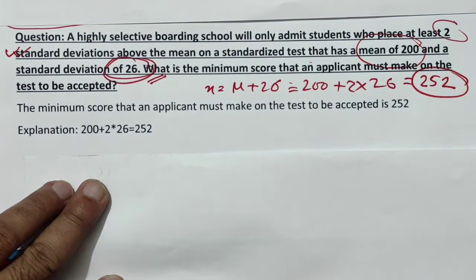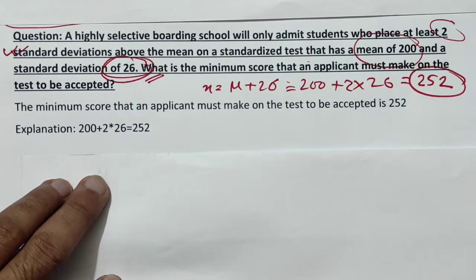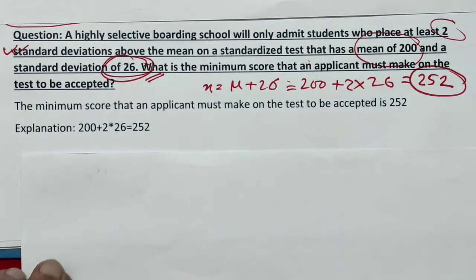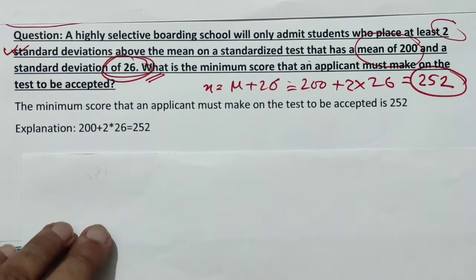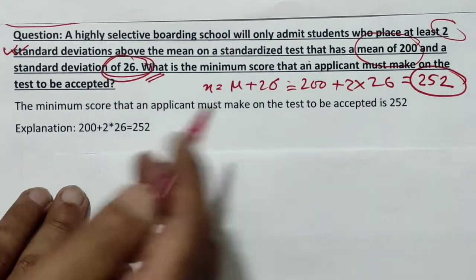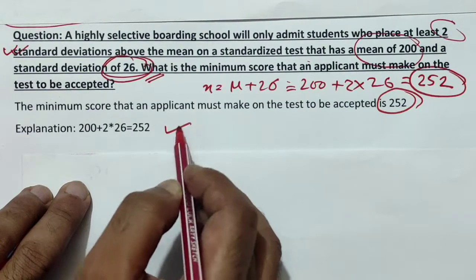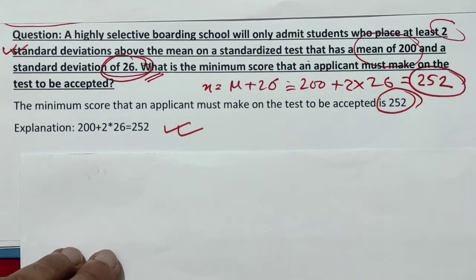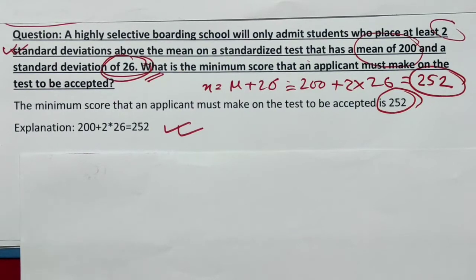This is the answer. The applicant must score at least this to be accepted. The answer is 252. The explanation is here — in this way, you can get the solution.